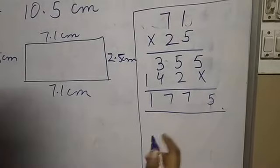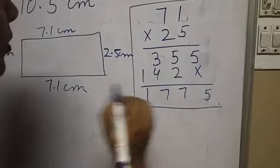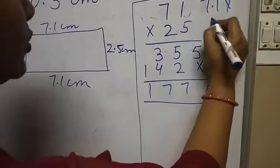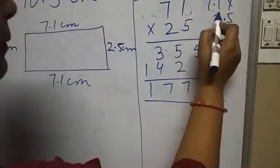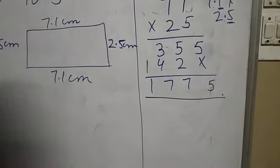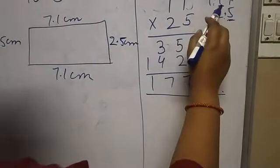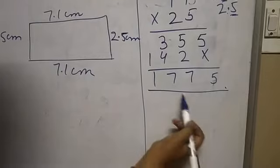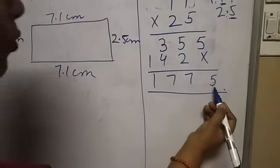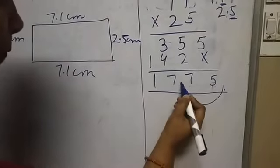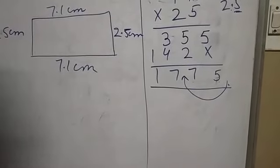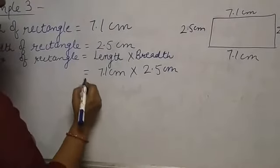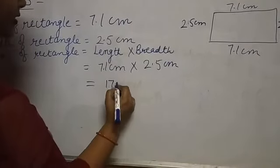Ignoring the decimals, we do 71 × 25. The result is 1775. Now for decimal placement: 7.1 has one digit after the decimal, and 2.5 has one digit after the decimal. Total: two digits. Count two from the right-hand side: one, two. So the decimal goes here. The answer is 17.75.